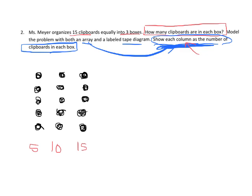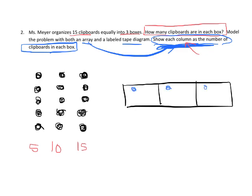If we wanted to model this using a tape diagram, it would look like this. So we're going to draw our little tape diagram, and we're going to cut it up into three because that represents our three boxes. And then I would put in my little clipboards. 1, 2, 3, 4, 5, 6, 7, 8, 9, 10, 11, 12, 13, 14, 15. And there you go.